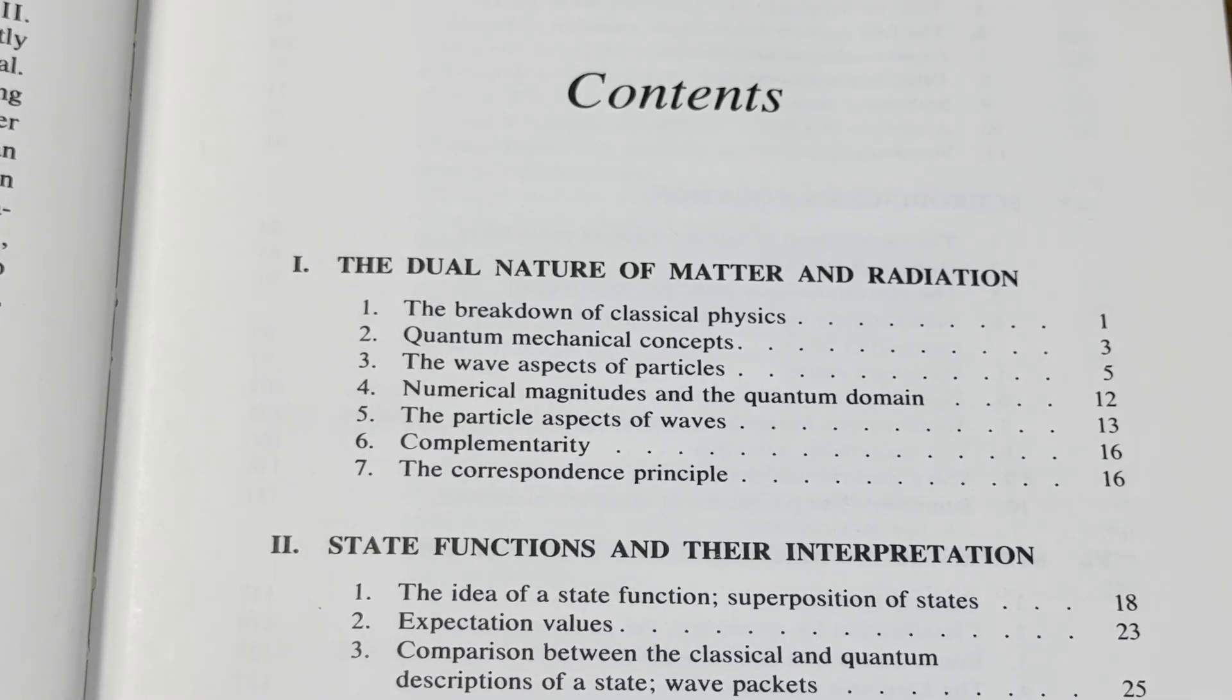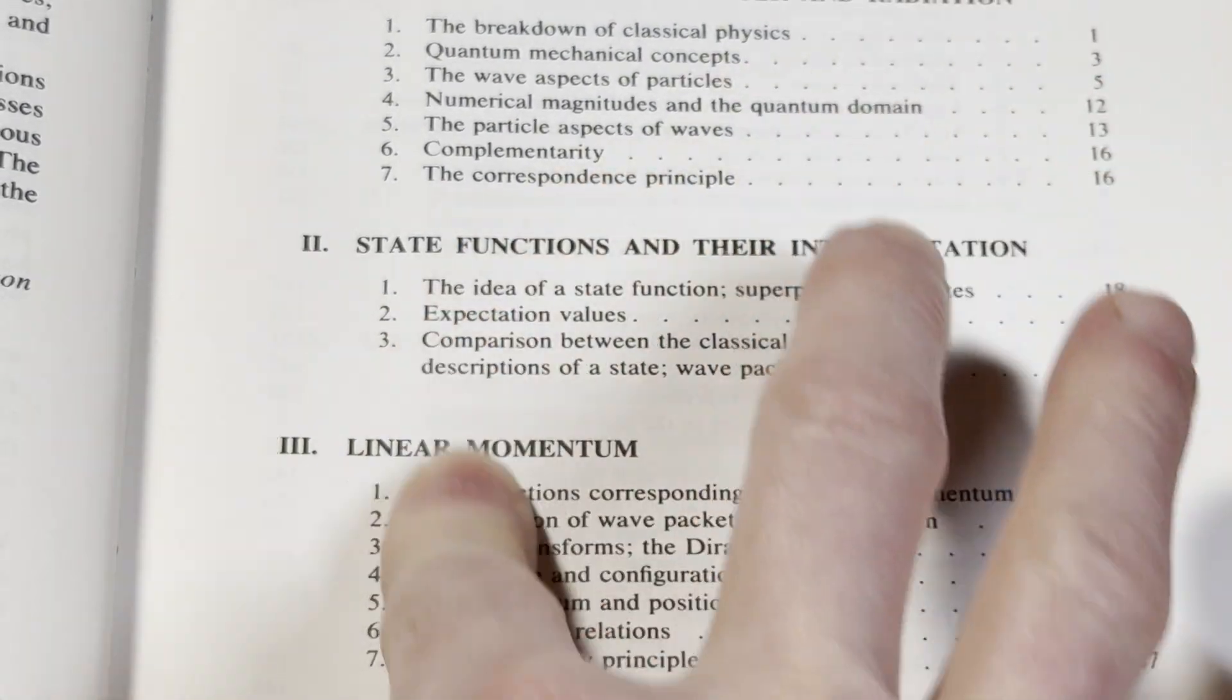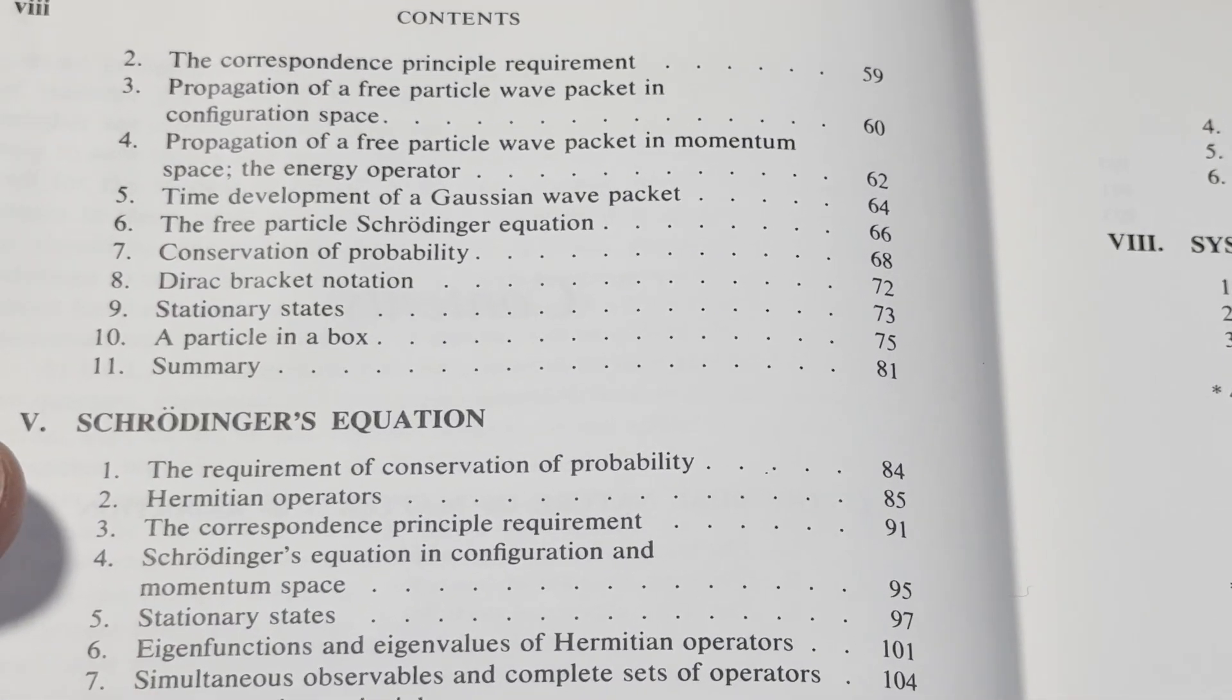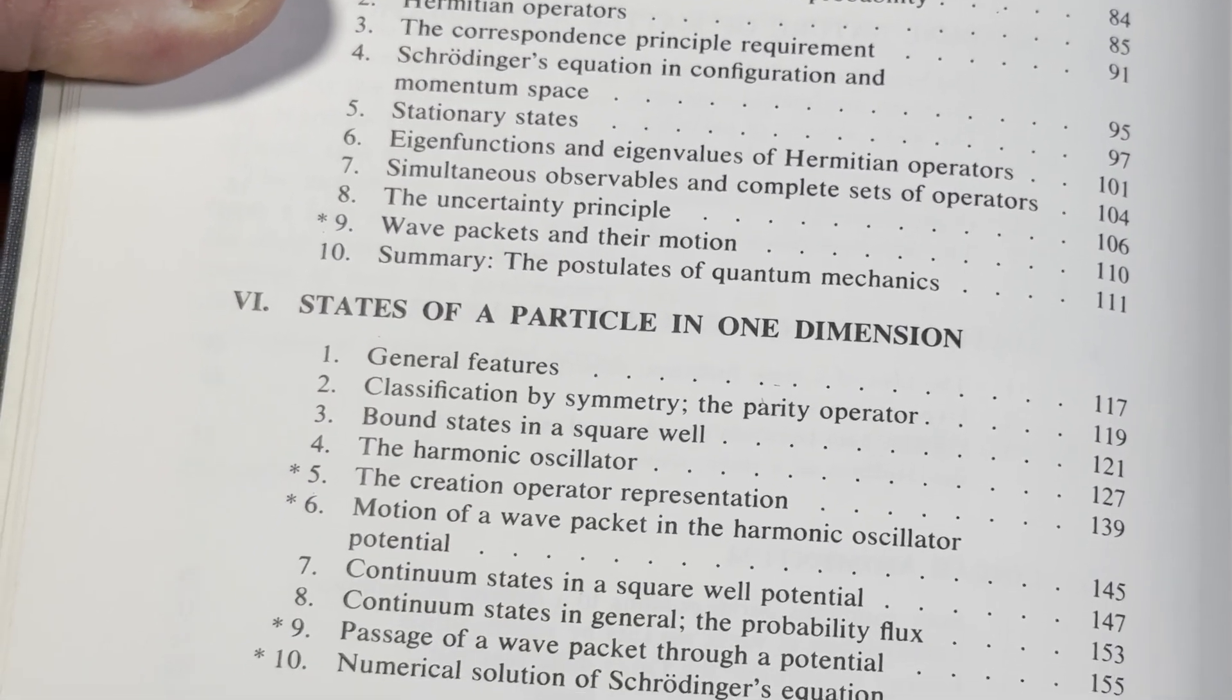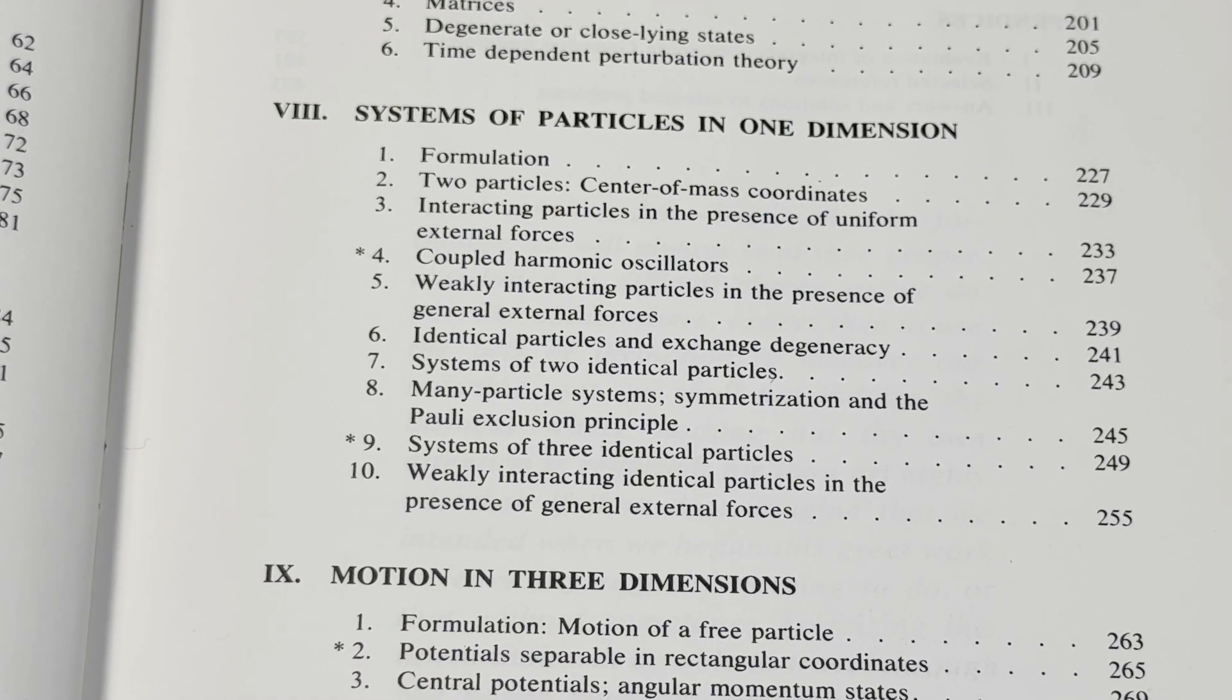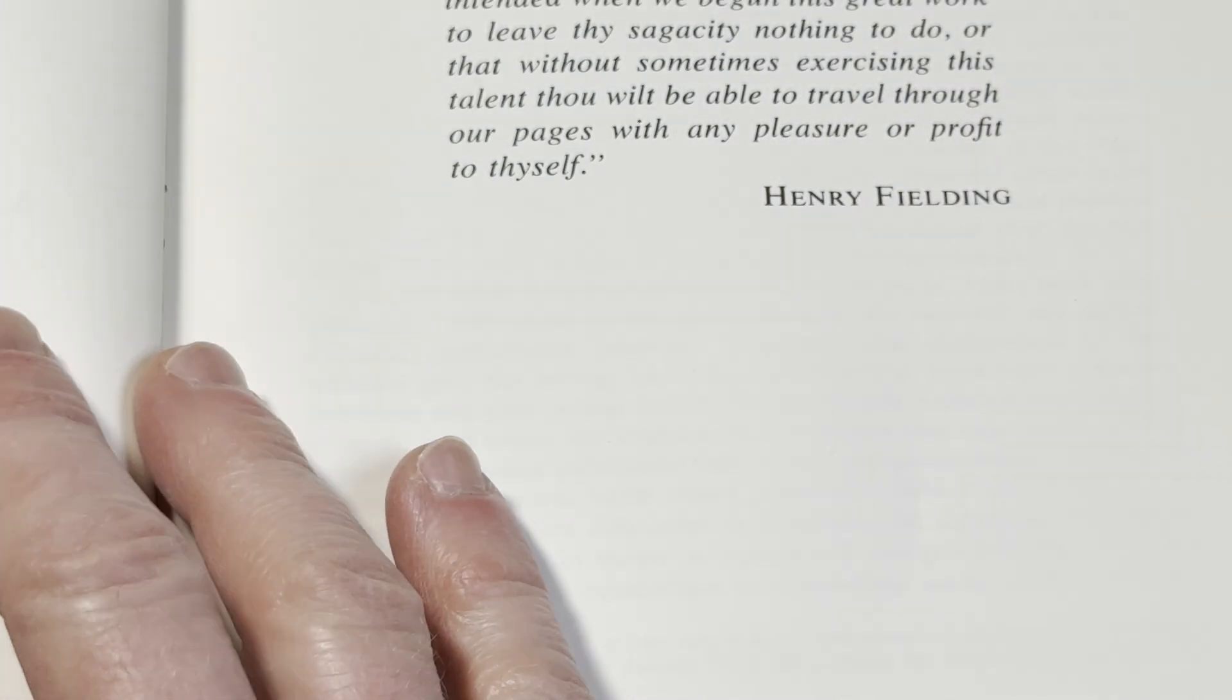Let's take a look at the contents of this. The dual nature of matter and radiation. State functions and their interpretation. Linear momentum. So some of these things are familiar. I've seen some of these things. Motion of a free particle. A lot of things here are familiar, right? And it's because you see them in other places. Schrodinger's equation. States of a particle in one dimension. Approximation methods. Then we have systems of particles in one dimension. Motion in three dimensions. Angular momentum and spin. Some applications and further generalizations. Pretty advanced stuff here. Definitely geared towards physics people.